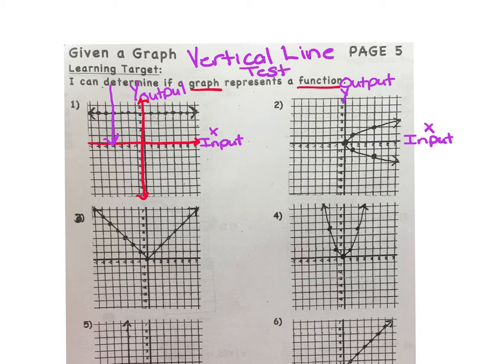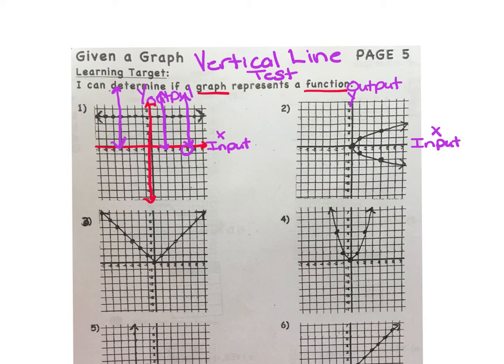No matter where you drop a vertical line along this given graph, you will only strike the line once. So that implies that every input value such as positive 5 has only one output value and in this case it's 4. So yes, this given graph is indeed a function.